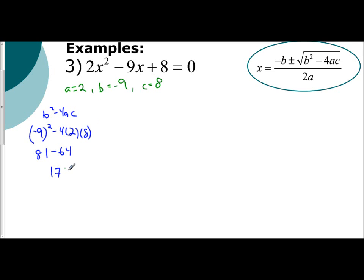Compare that to 0. 17 is greater than 0. It's positive, so you're going to have two real solutions, two real roots.